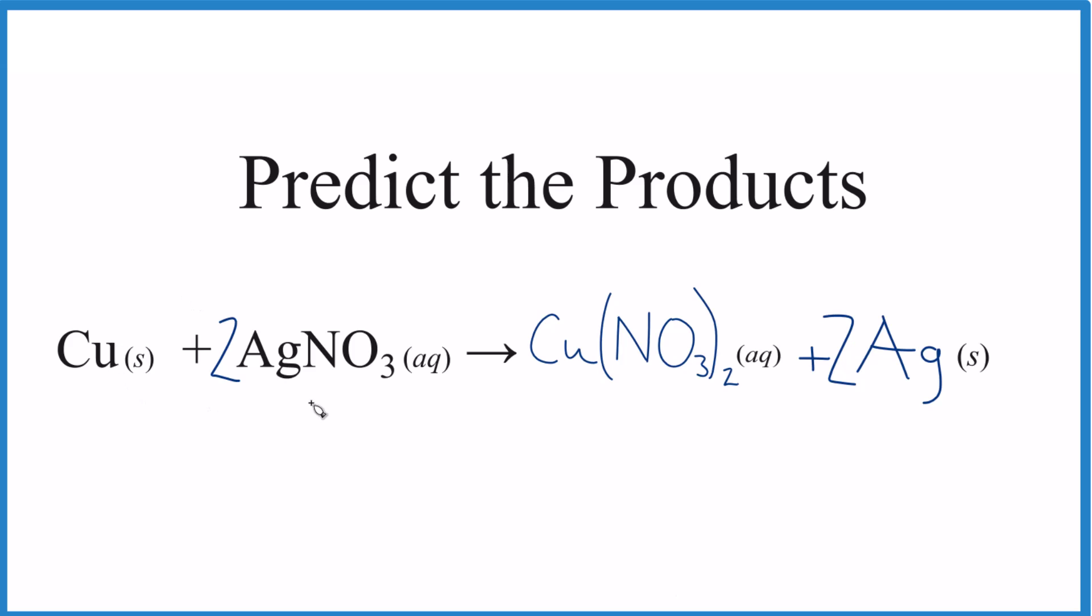So again, if you can classify the type of reaction then you can predict the products much easier. Make sure your charge balances and you're done. Do note that you could use the activity series to see if this reaction would actually take place. There's a link at the end of this video explaining how to do that.